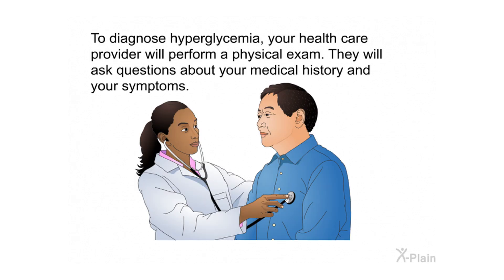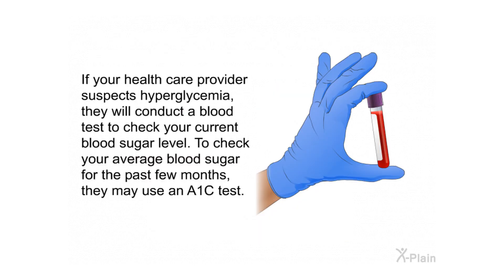To diagnose hyperglycemia, your health care provider will perform a physical exam and ask questions about your medical history and symptoms. If hyperglycemia is suspected, they will conduct a blood test to check your current blood sugar level. To check your average blood sugar for the past few months, they may use an A1C test.